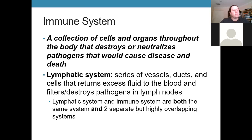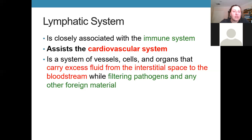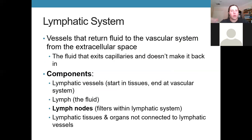The lymphatic system is defined as a series of vessels, ducts, and cells that return excess fluid to the blood and filter and destroy pathogens in the lymph nodes. Some of the cells and organs used by the immune system are the lymphatic system, so these systems are simultaneously the same thing and also kind of separate. The lymphatic system considered alone doesn't do very much, so it makes more sense to integrate them together. It also works very closely with the cardiovascular system, returning fluid that escapes out of the capillaries back into the blood.